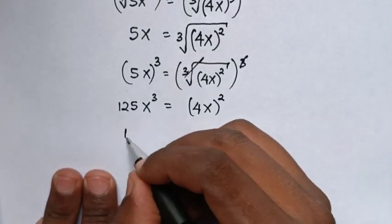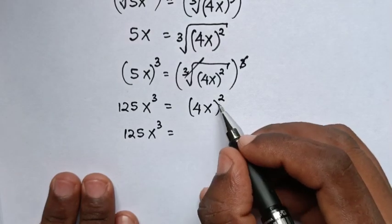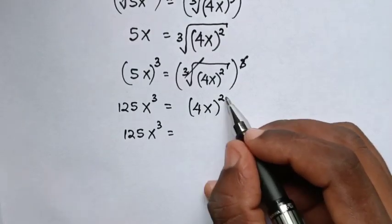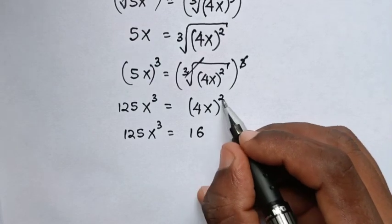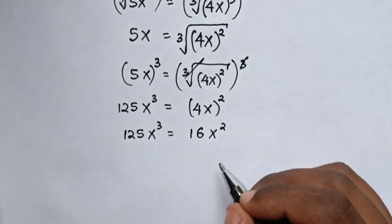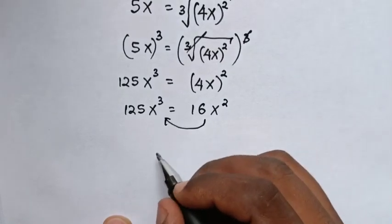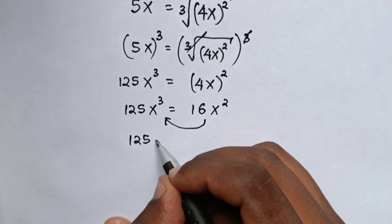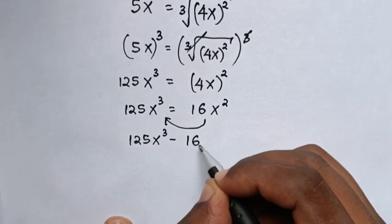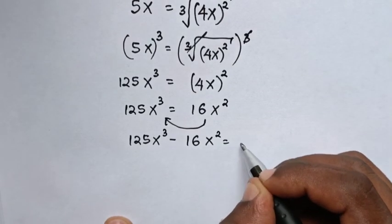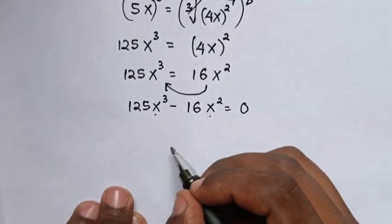Then our equation will be 125 x power of 3 is equals to 4 square is 16 and then here is x square. Then we take this to the left side, so it will be 125 x power of 3 minus 16 x square is equal to 0. Then we can see here x square is common.